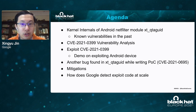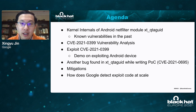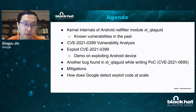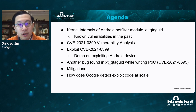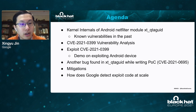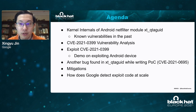Here's the agenda: we will introduce the internals of the xt_qtaguid kernel module in the Android kernel, including past vulnerabilities, then analyze the use-after-free bug CVE-2021-0399. We will talk about how to exploit the vulnerability on a modern Android device, including a demo video. I will also cover another use-after-free bug found in this kernel module while writing the PoC. Richard will talk about Android kernel mitigations and how Google detects exploit code at scale by various approaches.